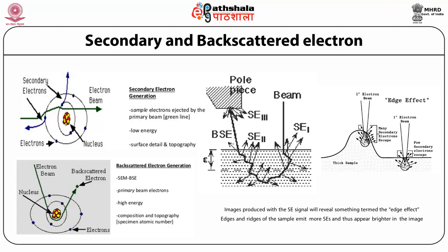Backscattered electrons are those electrons scattered backward and emitted out of the specimen. When incident electrons are scattered in the specimen, they are sometimes called reflected electrons. Since backscattered electrons possess higher energy than secondary electrons, information from relatively deep regions is contained in the backscattered signal. Backscattered electrons are sensitive to the composition of the sample — the larger the atomic number of the constituent atoms, the larger the backscattered electron yield. An area consisting of heavier atoms appears brighter in the backscattered electron image, making it suitable for observing compositional differences.